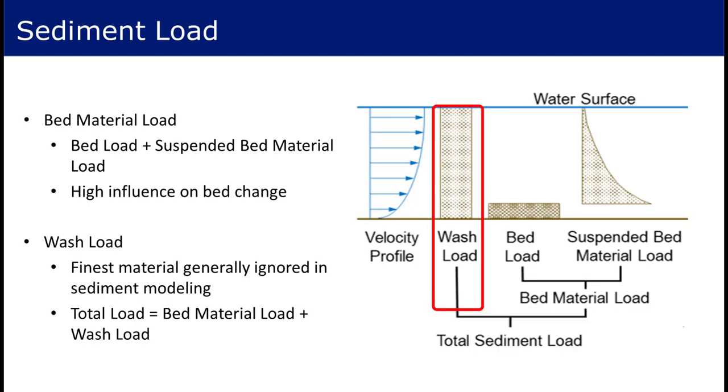Wash load is defined as the portion of the total load that is not found in meaningful amounts in the channel bed. It describes the smallest particles of the total load, frequently silt, clay, and very fine sand, that are transported in suspension. Because they are not found in the channel bed in meaningful quantities, they do not contribute to significant erosion in the channel, and because they are so small, they do not deposit until flow velocities are near zero.